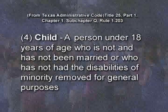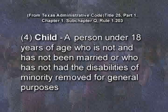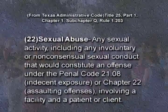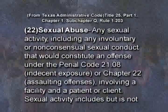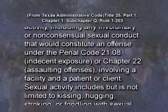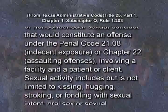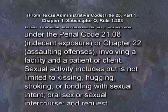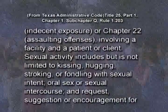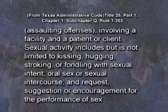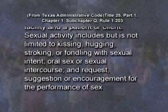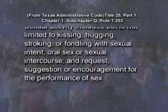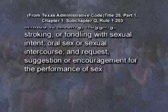In this training, the terms molestation and sexual abuse are used interchangeably. From the Texas Administrative Code: Child — a person under 18 years of age who is not and has not been married or who has not had the disabilities of minority removed for general purposes. Sexual abuse — any sexual activity, including any involuntary or non-consensual sexual conduct that would constitute an offense under Penal Code 21.08 or Chapter 22, involving a facility and a patient or client. Sexual activity includes, but is not limited to, kissing, hugging, stroking or fondling with sexual intent, oral sex or sexual intercourse, and request, suggestion, or encouragement for the performance of sex.